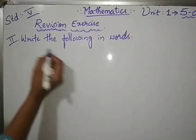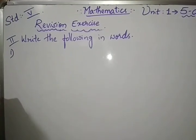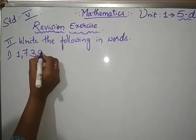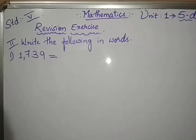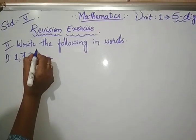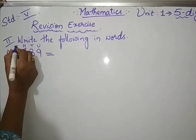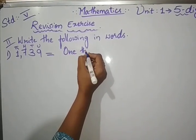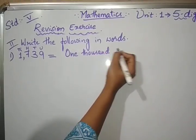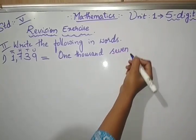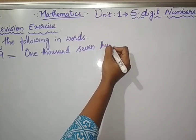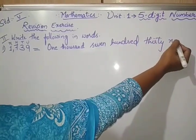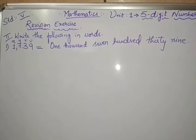Next, write the following in words. First one, 1,739. You have to write it in words. 9 is in unit, then tens, hundreds, this is in 1000th place. So write down, how many thousands are there? One thousand seven hundred thirty nine.